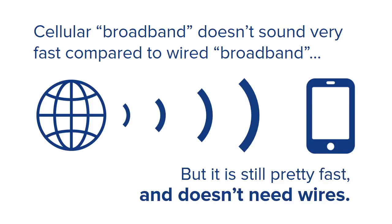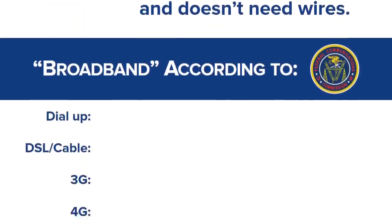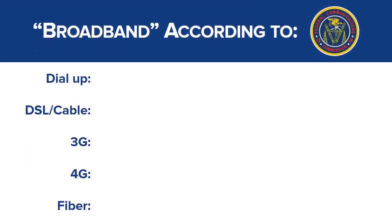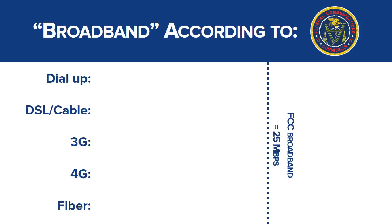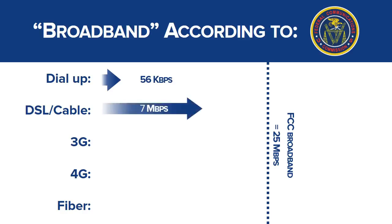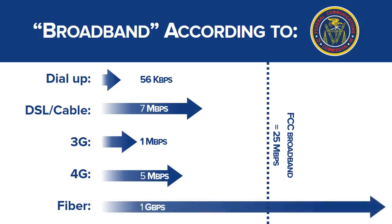Remember the federal government's number to define broadband? As of January 2015, that number is 25 megabits per second. According to the federal government, broadband technologies have to let you download 25 megabits per second and upload — that means send out to the internet — 6 megabits per second. But most broadband providers today don't offer those speeds, or at least most of their customers don't have access to that level of service. This includes the latest 4G cellular networks.